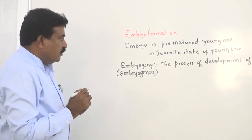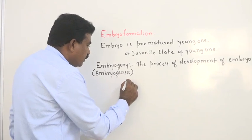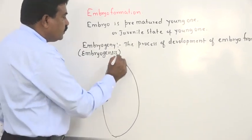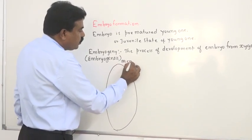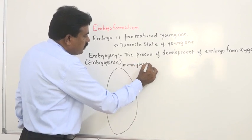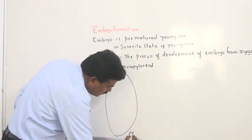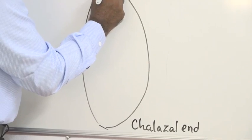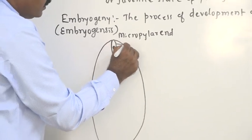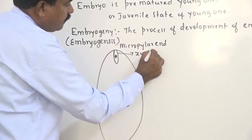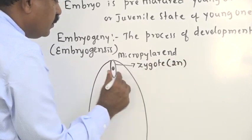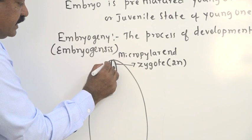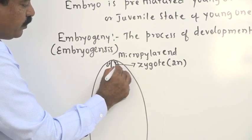If you take the mature embryo sac, the female gametophyte, one end is the micropylar end and the other is the chalazal end. The zygote is present towards the micropylar end, where embryo development takes place. We also have disintegrating antipodal cells present.